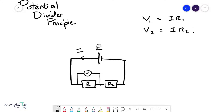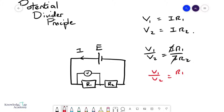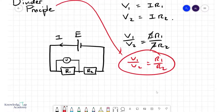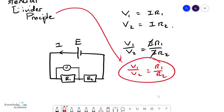So V1 over V2 equals i·R1 over i·R2. The i's cancel, giving V1 over V2 equals R1 over R2. This is precisely the potential divider principle — the ratio of the potential differences across the resistors is equal to the ratio of the resistances themselves. This is only applicable to a series circuit because it requires the currents to cancel out.